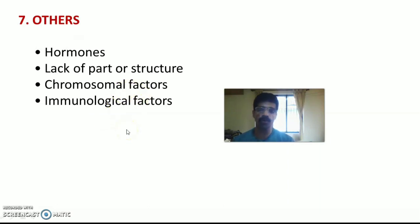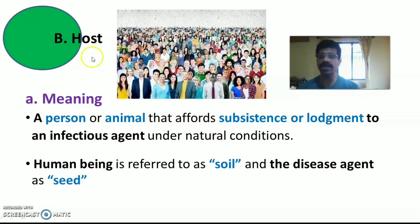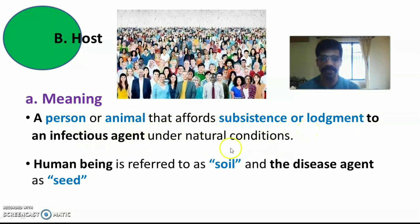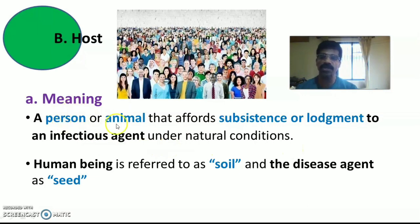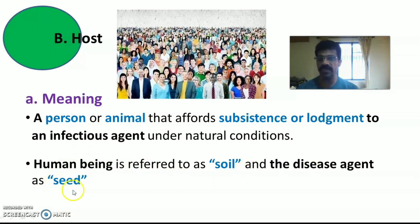The second factor in the Epidemiological Triad is host. The host is a person or animal that affords subsistence or lodgement to an infectious agent under natural conditions — a human being or animal in which a pathogenic organism will harbor or develop. In the context of the epidemiological triad, the human being is considered the soil and the disease agent is the seed.